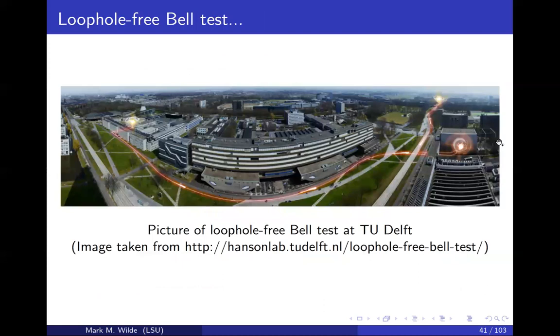It was only recently that what's called the loophole-free Bell test was conducted at Delft University in the Netherlands. What does that mean? With the Bell experiment there were two major loopholes. One is that Alice and Bob need to be sufficiently far apart. In this picture you see that they're on opposite ends of the campus. The other loophole was called the detector loophole. The photon detectors need to be efficient enough such that when a photon impinges on the surface of the detector, it has a high probability of actually clicking.